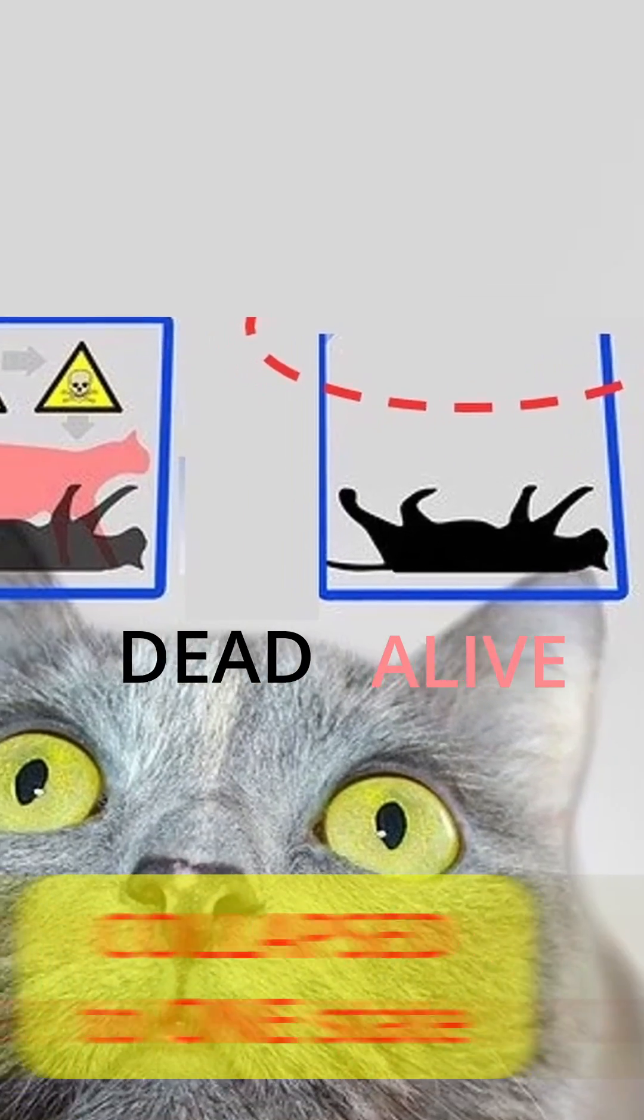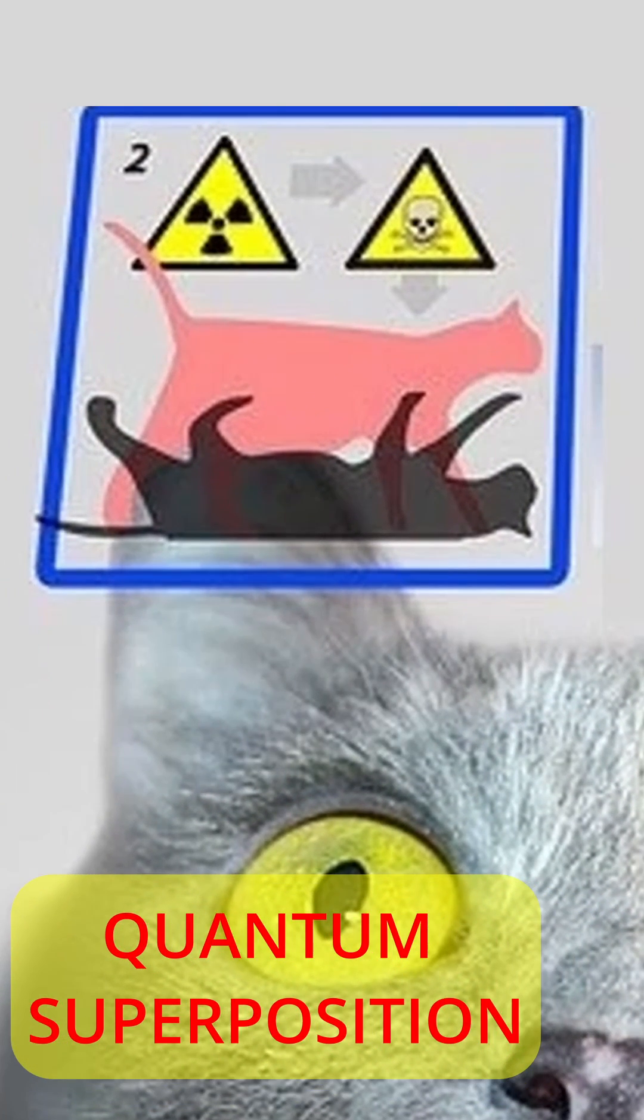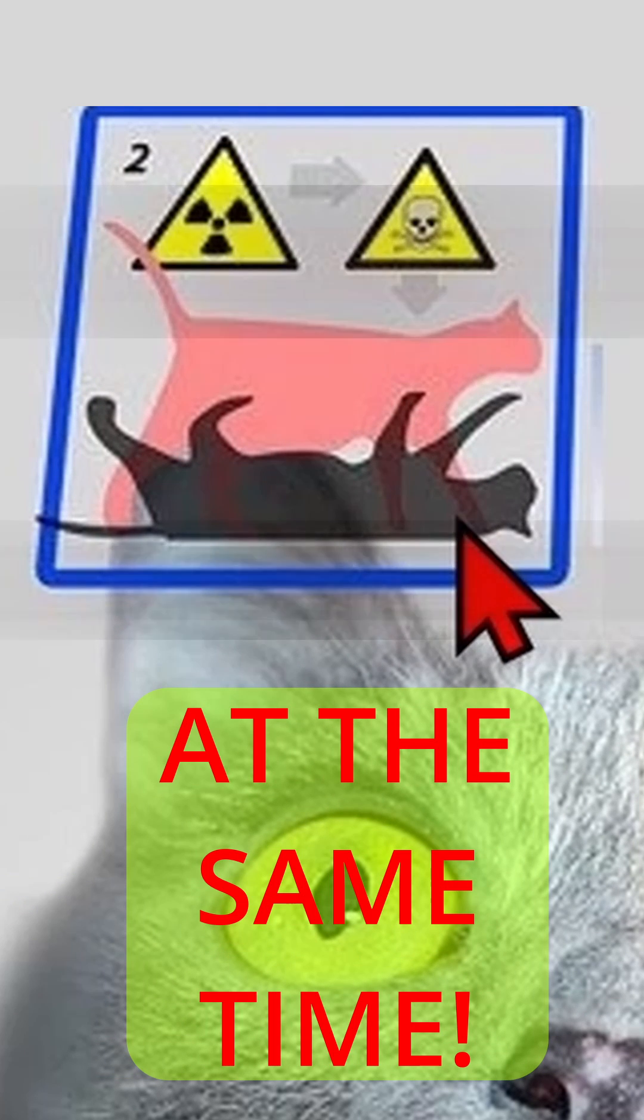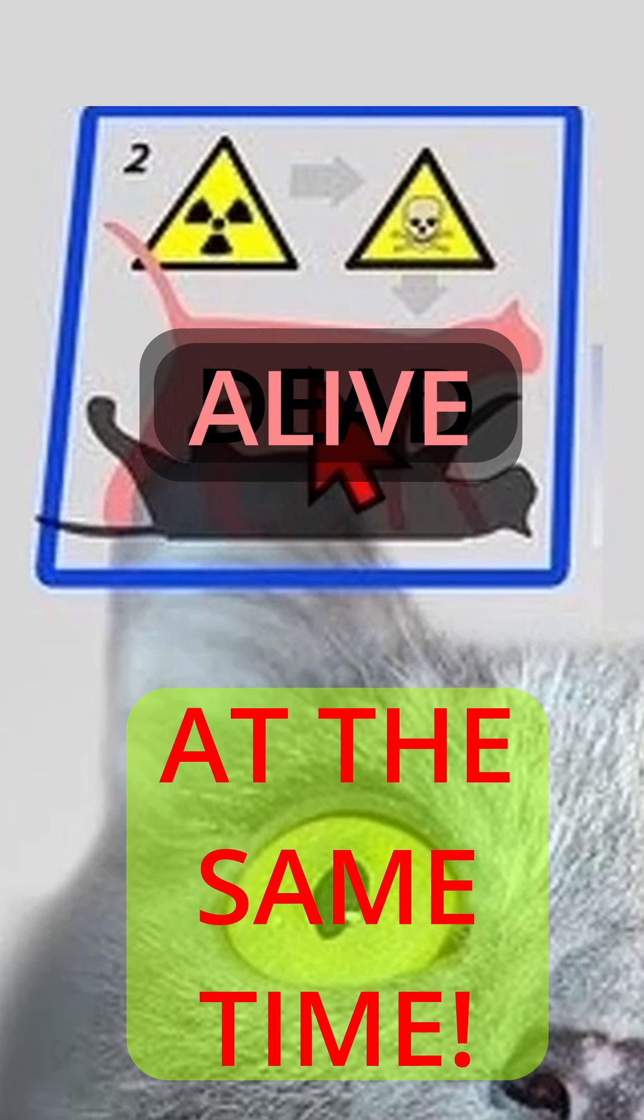The profound consequence though is quantum superposition. Prior to the measurement we have simultaneously Schrödinger's cat is both dead and alive.